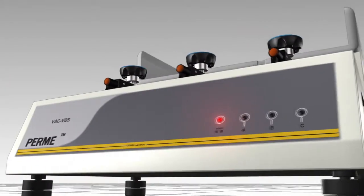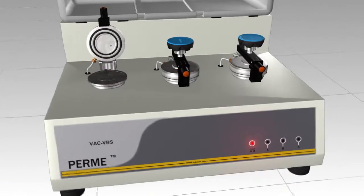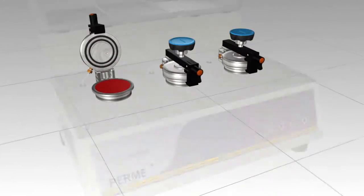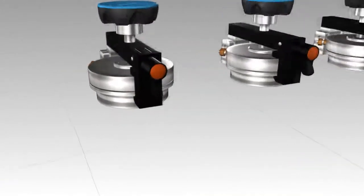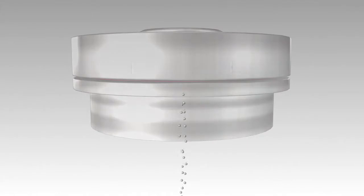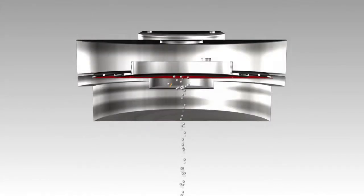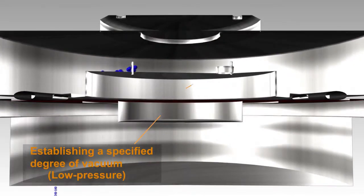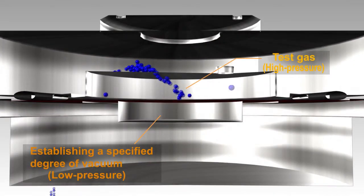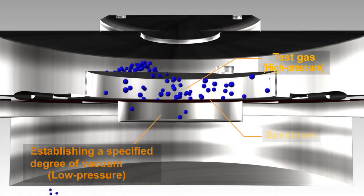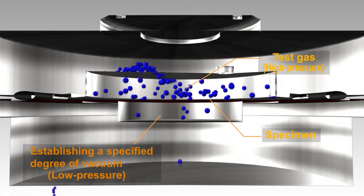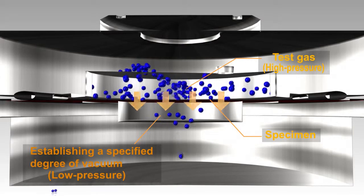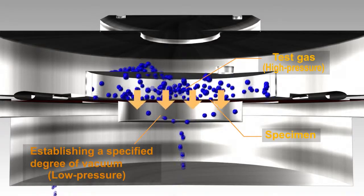VAC V2 works by firstly establishing a specified degree of vacuum in both upper and lower cells, then feeds test gas to the high pressure cell until a certain pressure is reached and ensures that a constant pressure difference is maintained across the specimen. The test gas then permeates from the high pressure cell to the low pressure cell under the gradient of differential pressure.